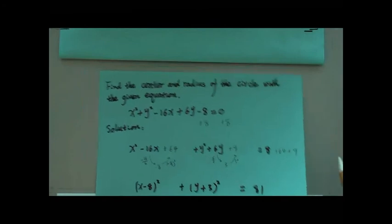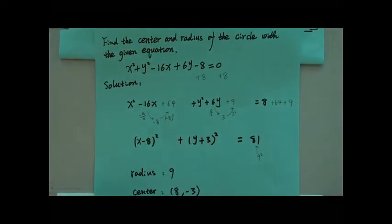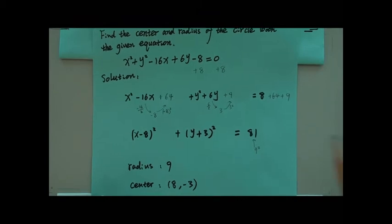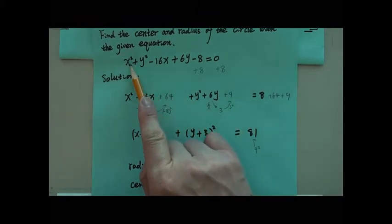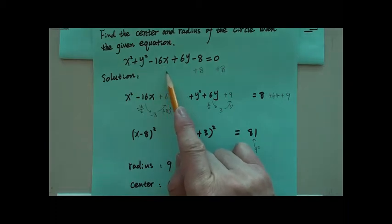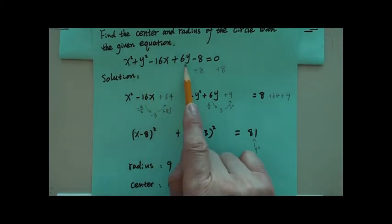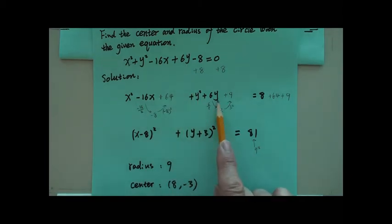Now, if you go back for this one, you will see that you want to combine x squared with negative 16x together. So put it like this. You want to combine y squared with 6y together.